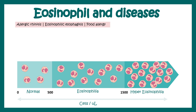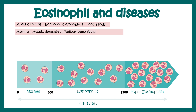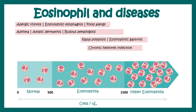In allergic rhinitis, eosinophilic esophagitis, and food allergy, we can see an eosinophilia-like situation where the number goes beyond 500. The same is true for asthma, atopic dermatitis, and bullous conditions. In cases of nasal polyposis and eosinophil gastritis, the eosinophilia is quite severe and almost reaches the hyper-eosinophilia stage, as is also the case in chronic helminth infection. In several cancers such as eosinophil leukemias, a hyper-eosinophilia-like situation can be seen.